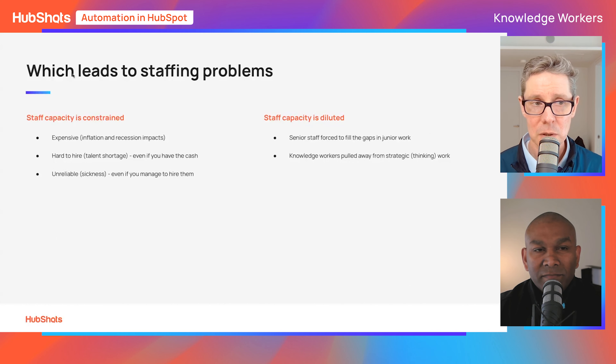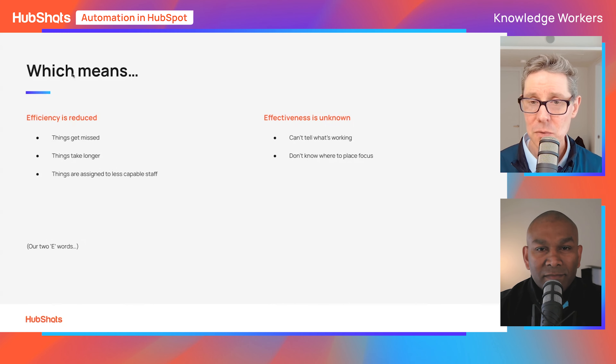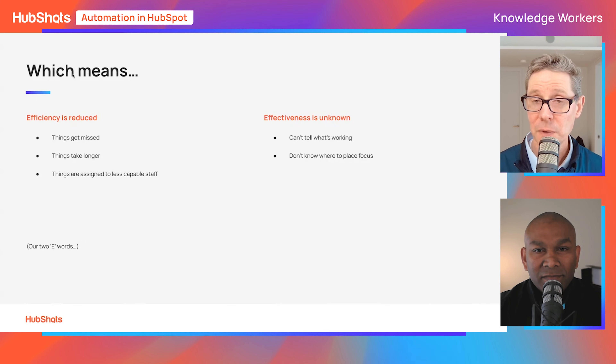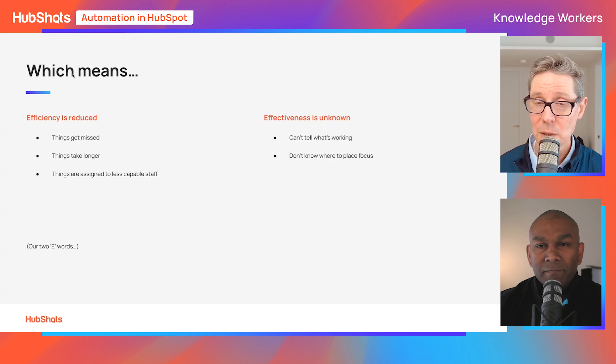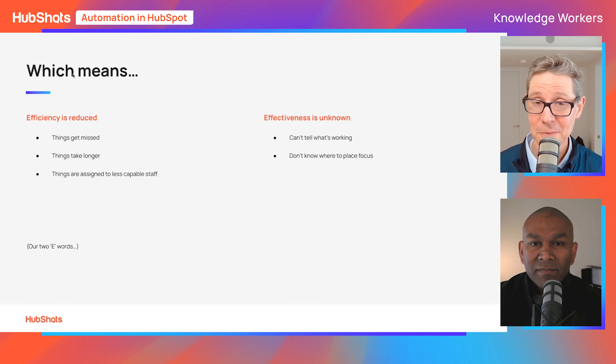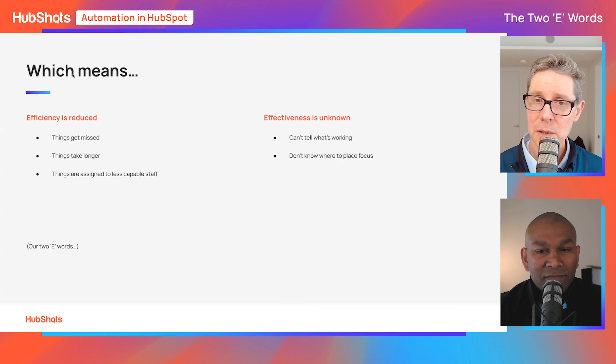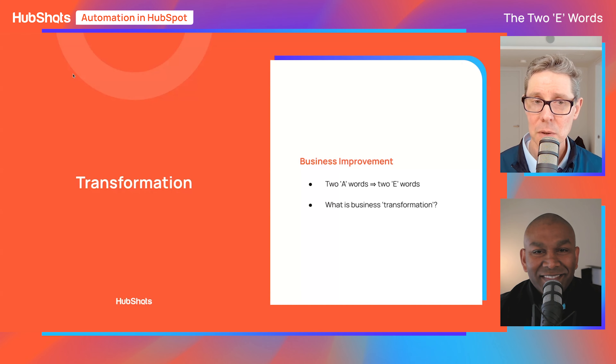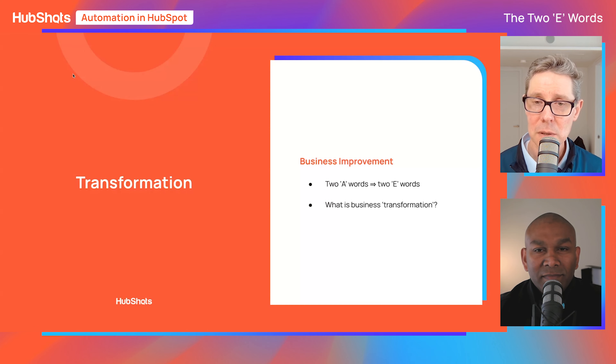So those are the problems. And what we see are the two E words. Efficiency is reduced — things are getting missed, things take longer. And the follow-on from that is that effectiveness is not known; we don't even know what's working. We're spending so much time trying to get processes done that were previously handled by others, that we can't actually work on the things that matter. There are two E words, and automation is what unlocks them.